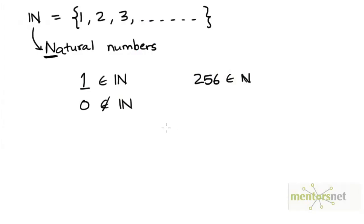Now if you take the set of natural numbers and their negatives, so minus 1, minus 2, minus 3 and so on along with 0, what you get here is the set of all integers.